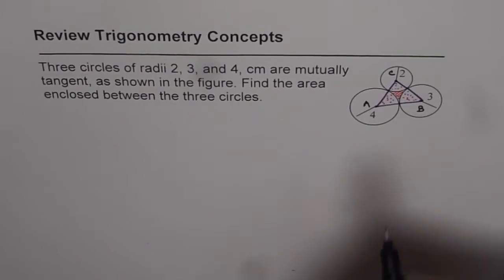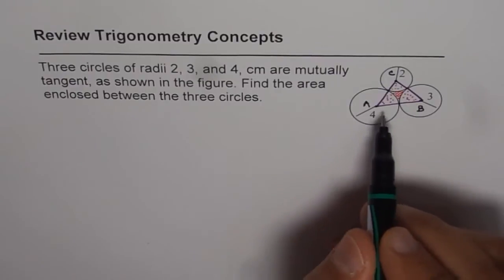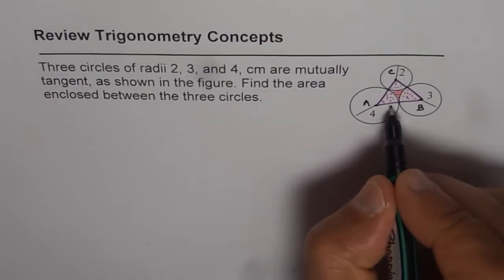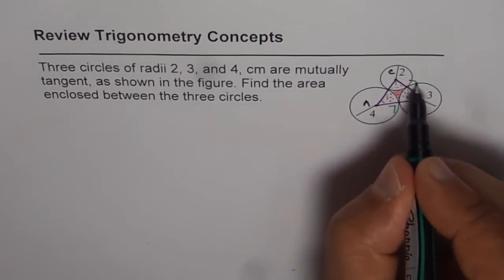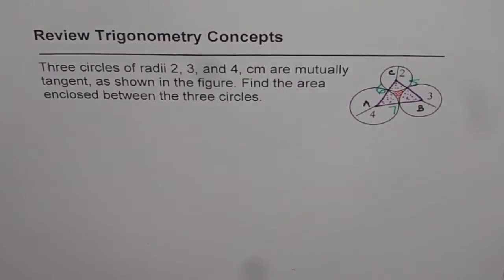So we have a triangle now. But what are the sides of the triangle? Sides we can get by combining the two radii, right? 4 plus 3 is 7. So this side is 7 for us. 2 plus 3 is 5. And 4 plus 2 is 6. So triangle, scalene triangle. All sides are different.